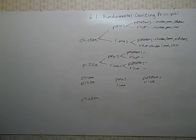Let me pare this list down a bit. Going with just chicken and pizza for the entree, peas and limas for the vegetable, and potatoes or rice for the starch — it would be 2 times 2 times 2, which equals eight outcomes. There's an organized way to list these called a tree diagram, which you'll need to be an expert at making. It's a way to make a sample space and looks a bit like a factor tree rotated 90 degrees. You start with the first category — two choices, either chicken or pizza.